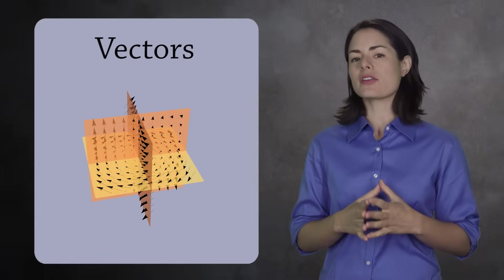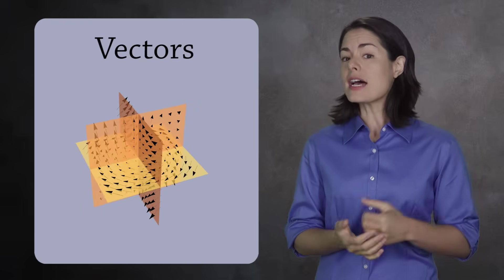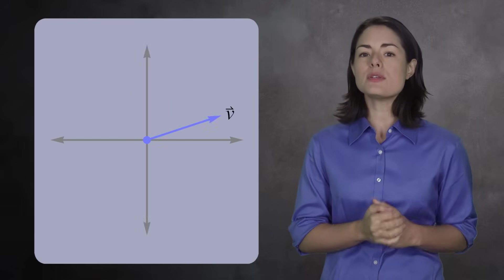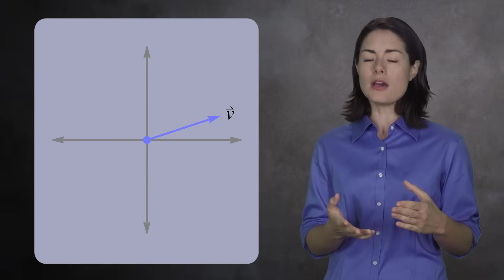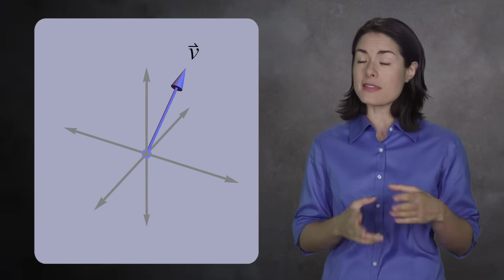You probably first encountered vectors in physics, where they are commonly used to describe forces. In science, a vector is an arrow with a length and a direction. You can have two-dimensional vectors which live in the plane, or three-dimensional vectors which are more appropriate for the three-dimensional space that surrounds us.